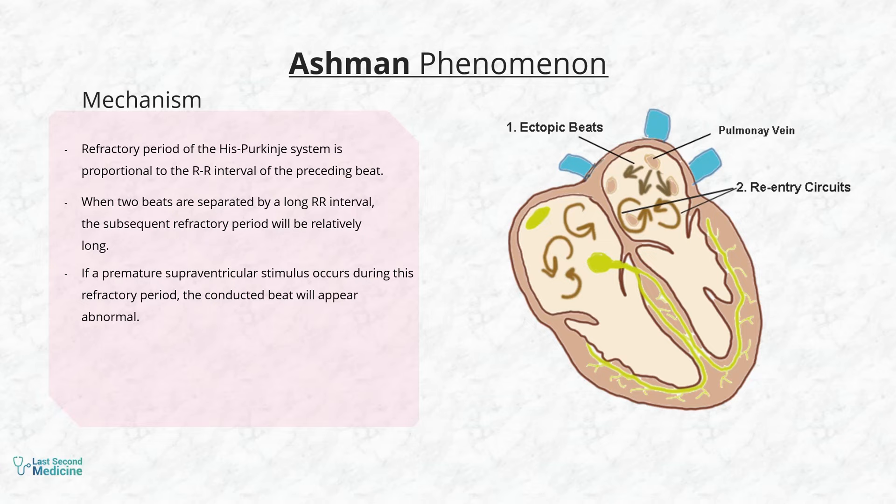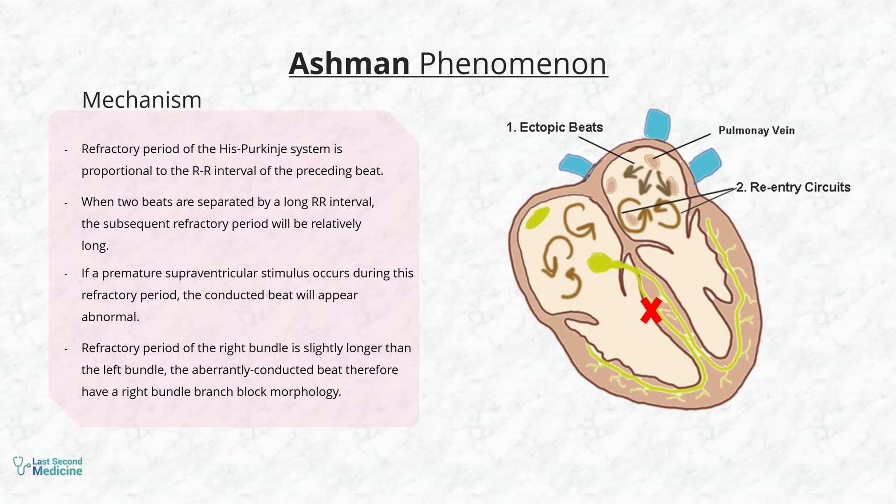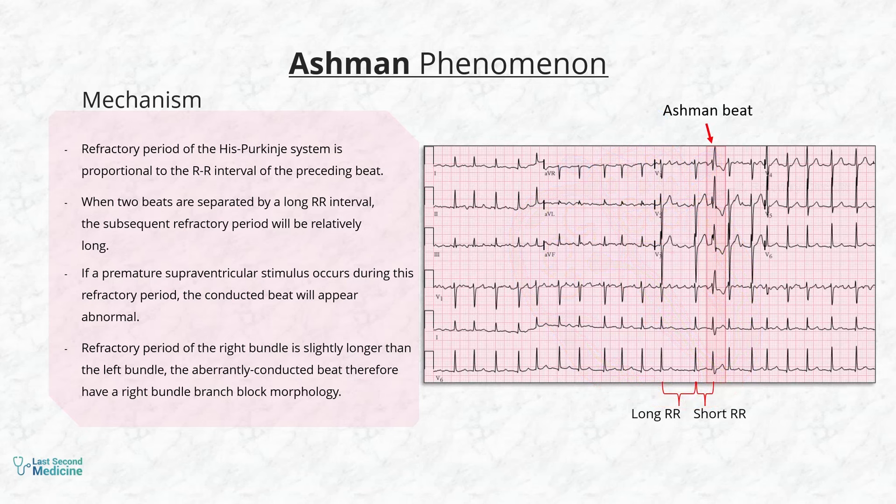During this long refractory period, if a premature supraventricular stimulus occurs whilst the His-Purkinje system is still refractory, then the conducted beat will appear abnormal. And as the refractory period of the right bundle is slightly longer than the left bundle, the aberrantly conducted beat travels through the left bundle and typically demonstrates a right bundle branch block morphology.